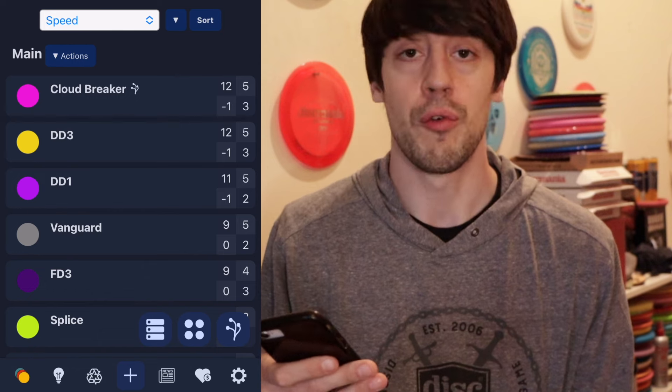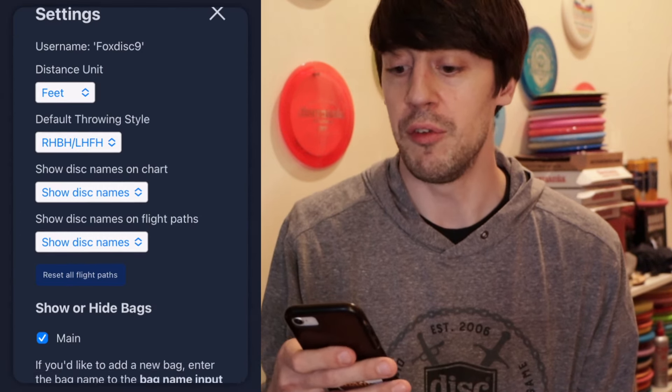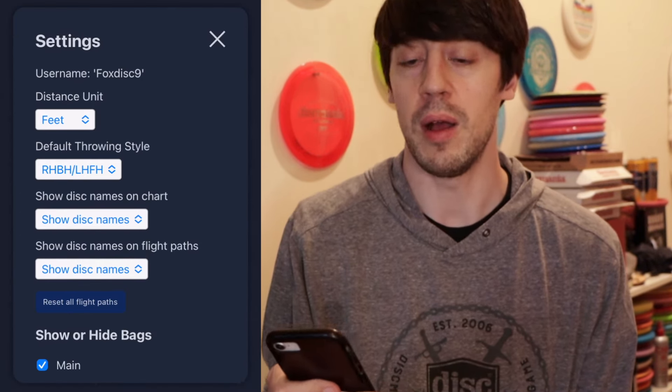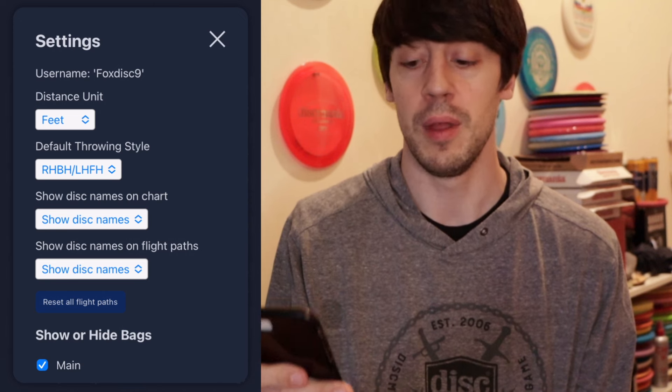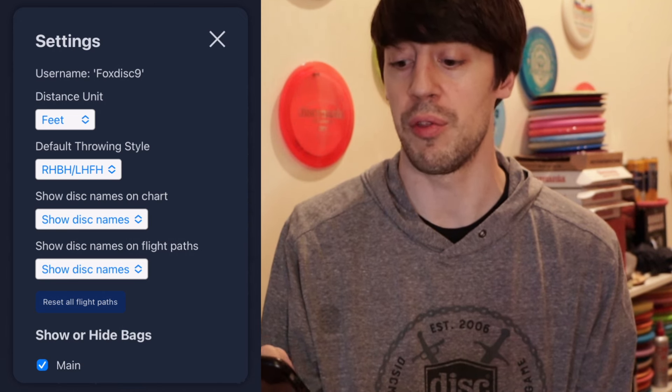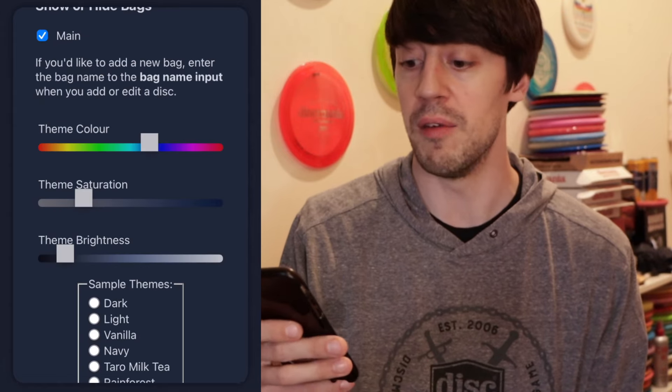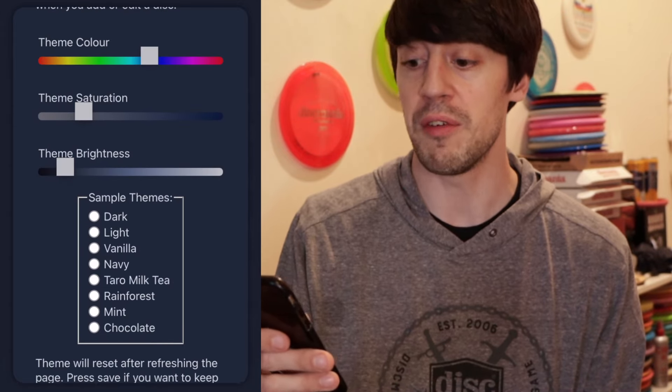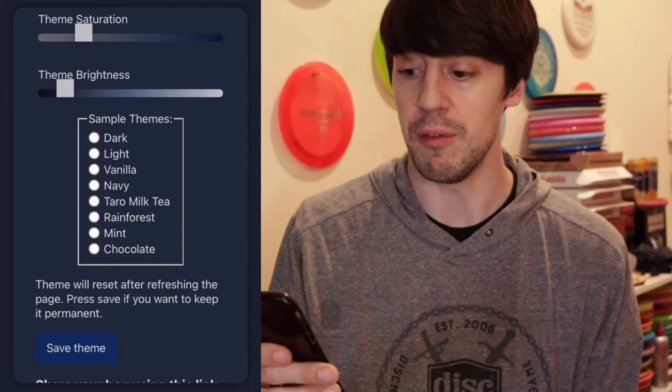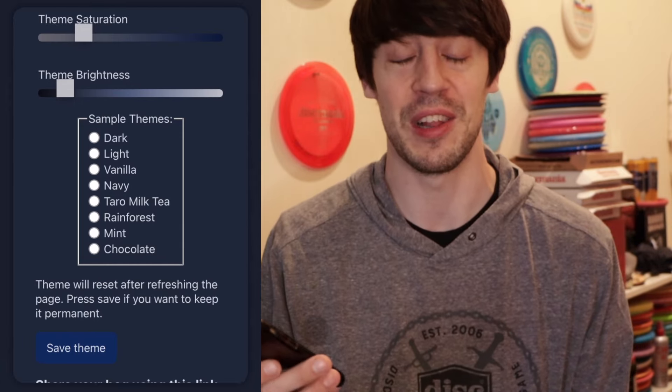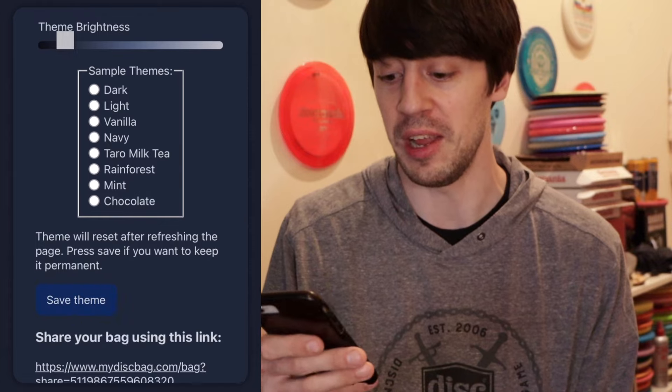So I just wanted to run through this really quick. In the settings section you can also change the units that it's measured in. You can change your throwing style, the disc names on the chart. You can even change the theme color of the entire website. You can choose different sample themes like a rainforest or mint or chocolate or just random colors that you want to change the theme to.